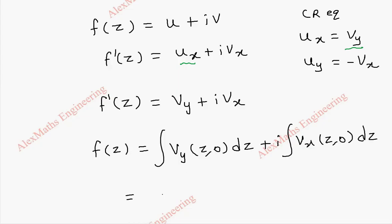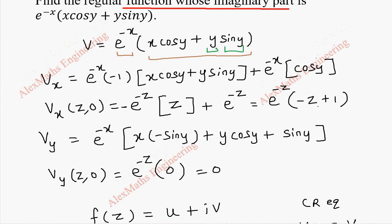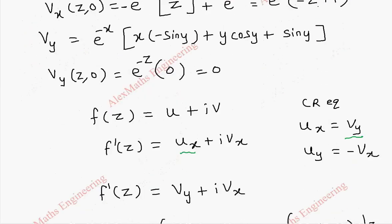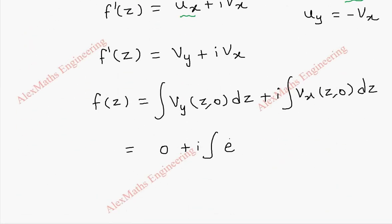Now vy is 0, so entire term is 0 plus i integral. This is e power minus z with a minus sign. There is a minus sign inside after taking e power minus z common, minus z plus 1. So e power minus z into minus z plus 1 dz.